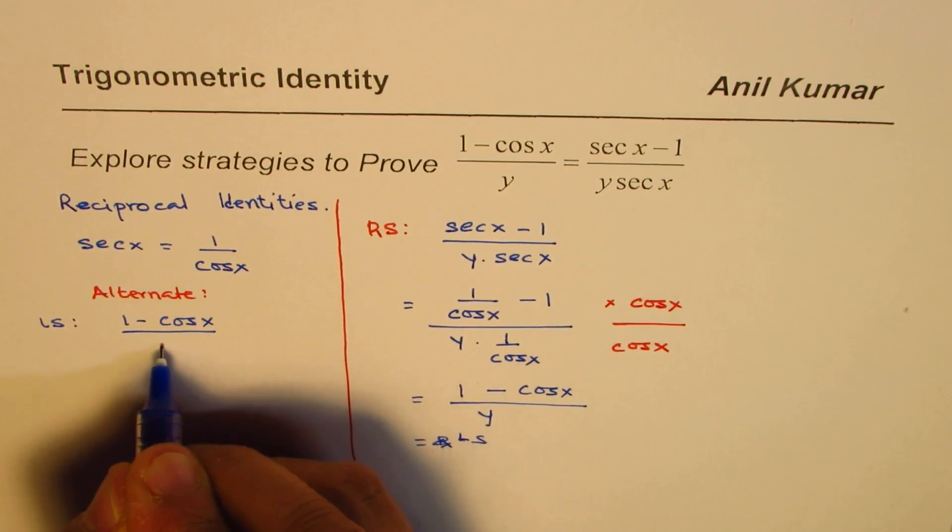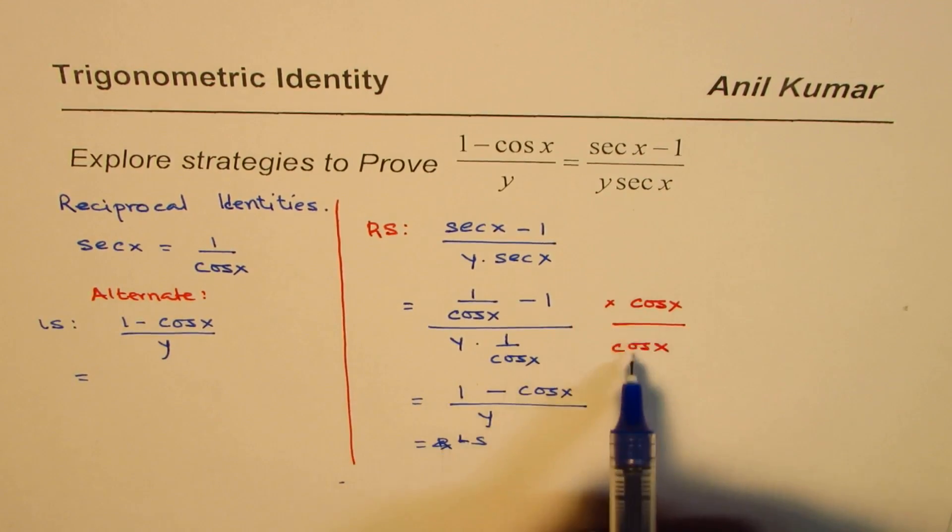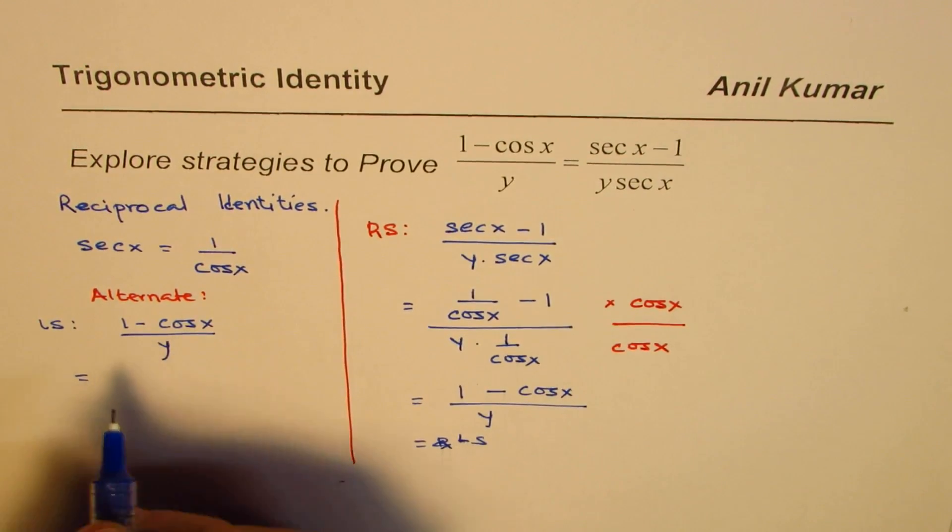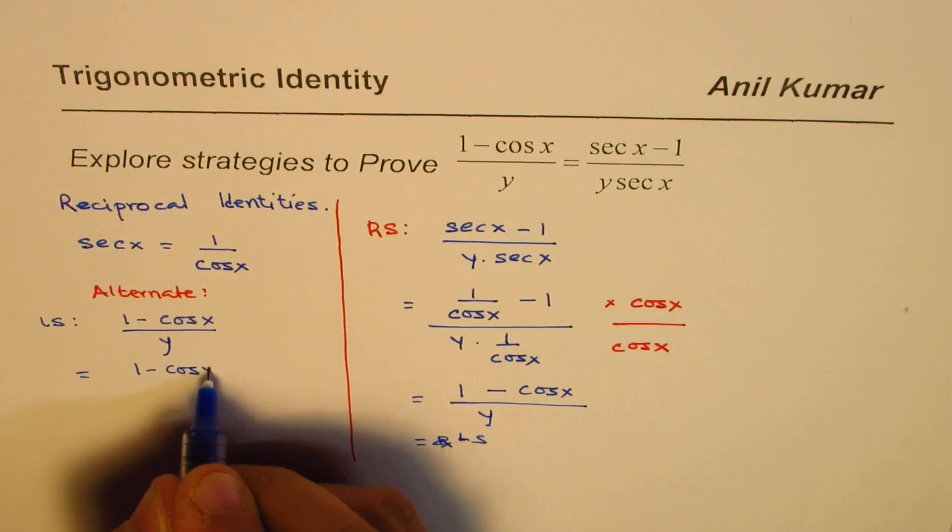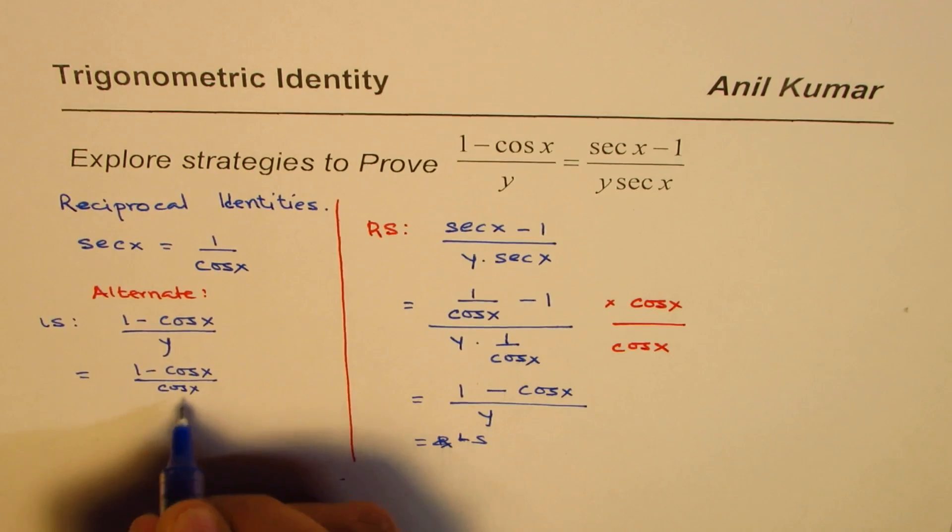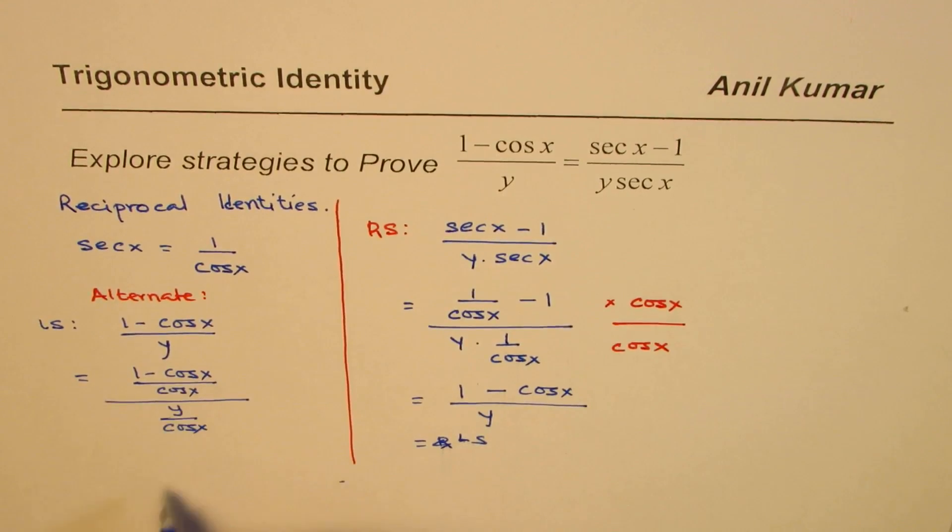We could do (1 - cos x) divided by cos x and also y divided by cos x. What do you get? You get 1/cos x, which is sec x, and cos x/cos x, which is 1.